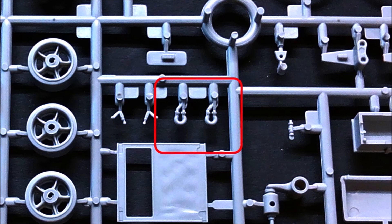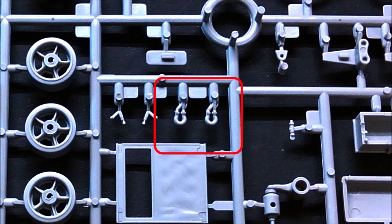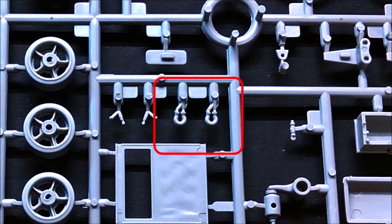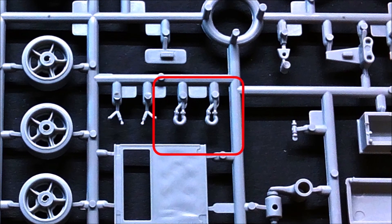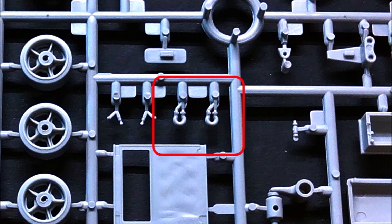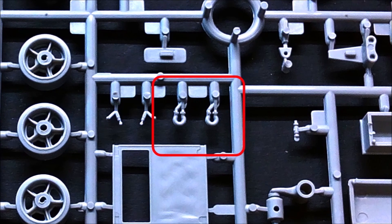Here you can see the kit shackles on their sprue. Maybe you can also see that these parts are misshapen. The reason is misaligned molds. Because of that, the shackles are too thick, but sanding them into shape would have removed too much styrene.